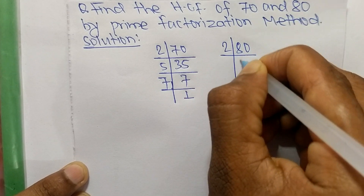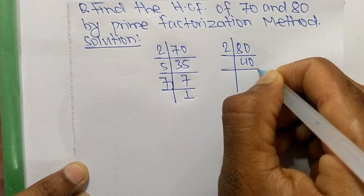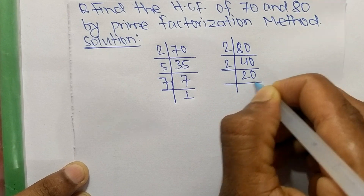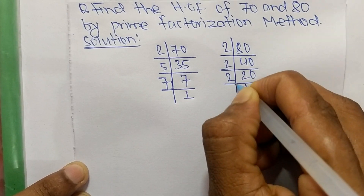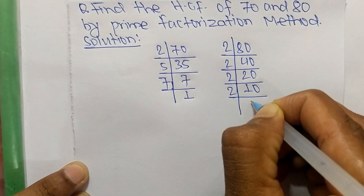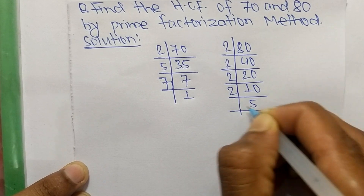The prime factors of 80 are: 2 times 40 equals 80, 2 times 20 equals 40, 2 times 10 equals 20, 2 times 5 equals 10, and 5 times 1 equals 5.